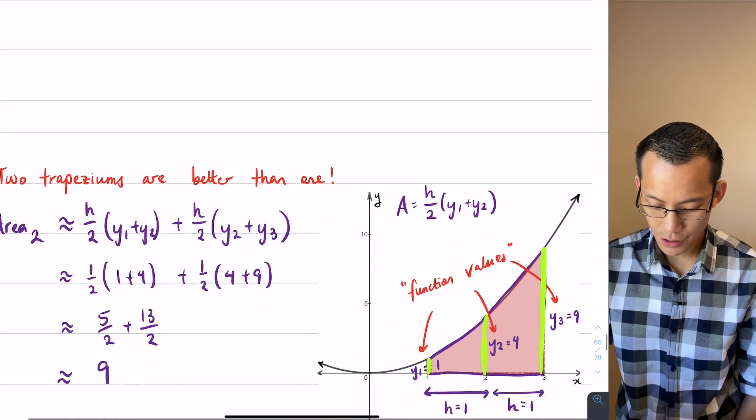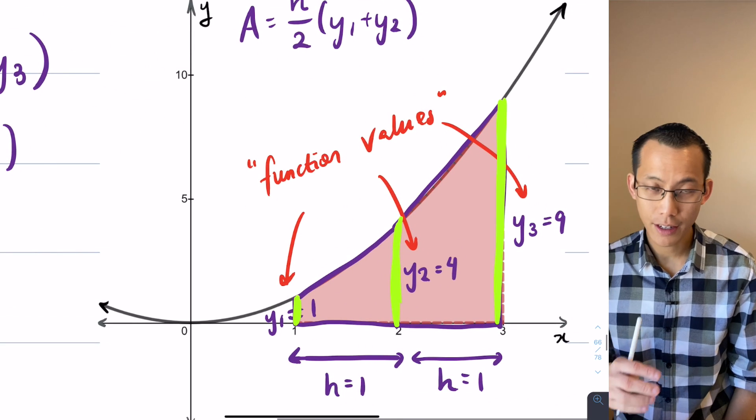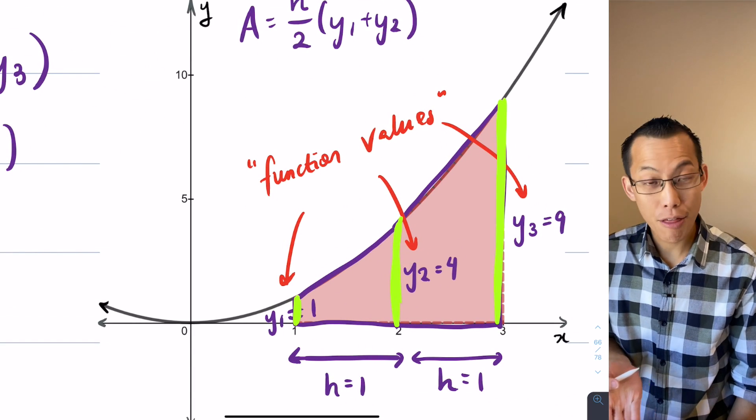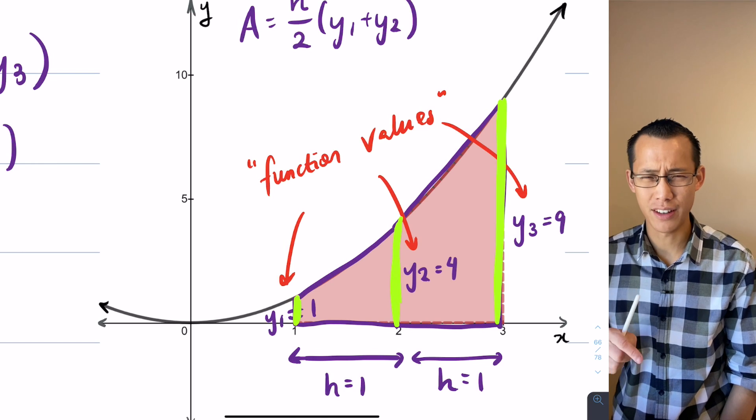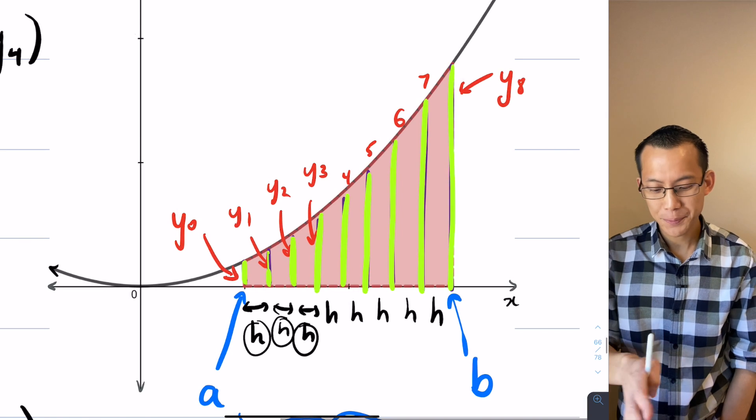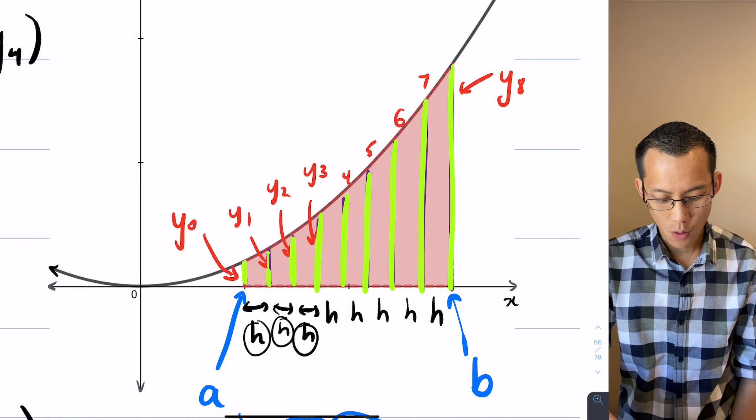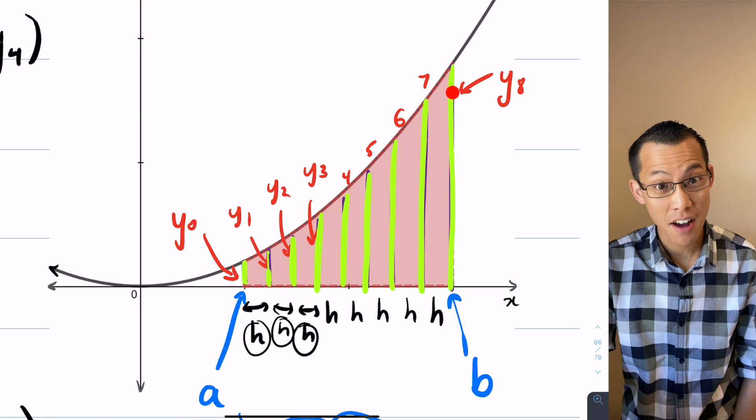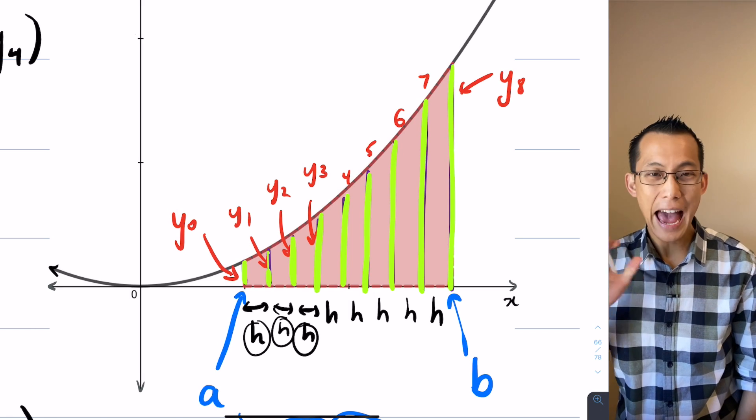If I keep on going here you can see I've highlighted these in green. When I tried out two trapeziums to get more accurate, I had three function values. Three function values for two trapeziums. And to just do one more example here, I've got one, two, three, four, five, six, seven, eight, nine function values for eight trapeziums.